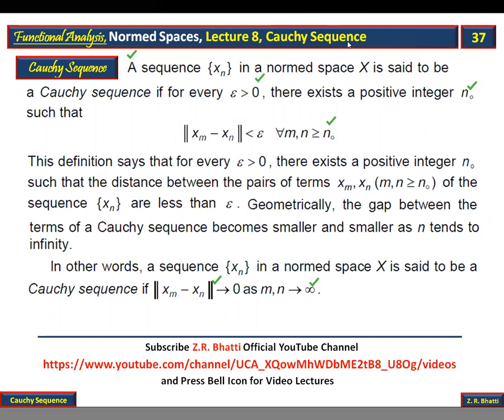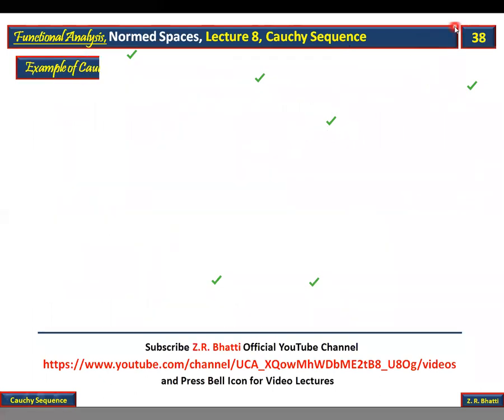In the next lecture, inshallah, we will cover some theorems related to Cauchy sequences. But to understand this, let's take an example of a Cauchy sequence. Example: the sequence {xn} = {1/n}. If you put n=1,2,3, you get 1, 1/2, 1/3, and so on. The first term is 1, the second term is 1/2.